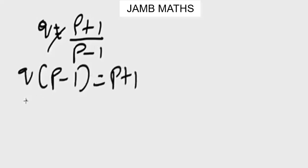All right, now let's simplify. We're going to have qp - q = p + 1. Remember, we are asked to make p the subject of the formula. All right, so to begin with, you collect like terms - the ones that have p in common will come together.